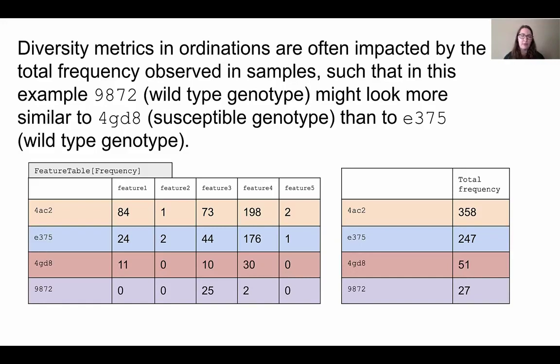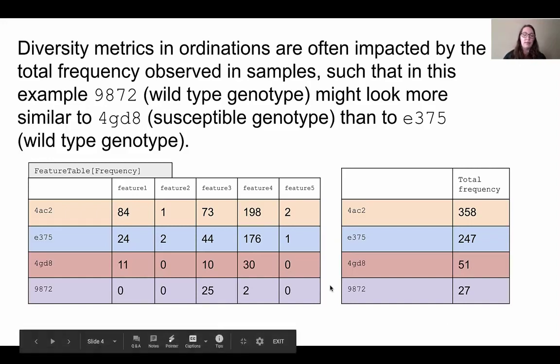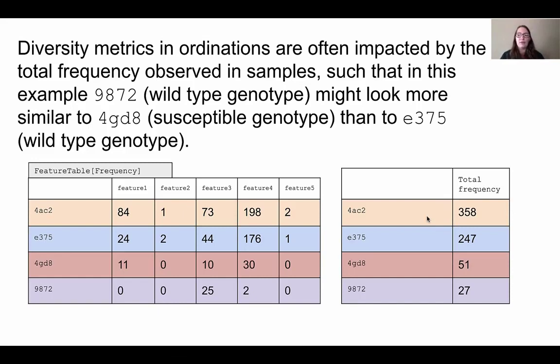Because the sequencing instrument can only sequence so much at a time, the instrument randomly chose to sequence a microbe from this purple sample 27 times, while it randomly chose to sequence a microbe from this yellow sample 358 times. This makes it really hard to do any valid statistics, including some diversity metrics that can accurately compare the samples.